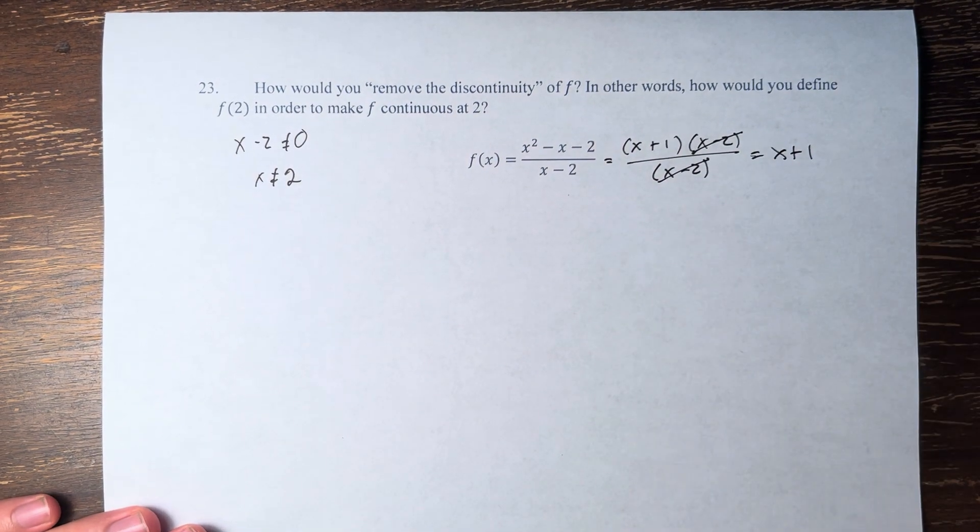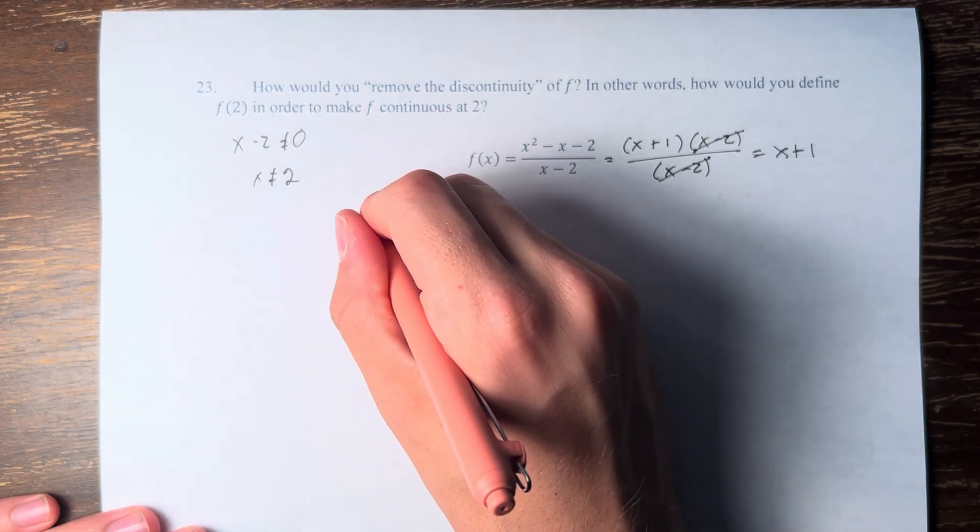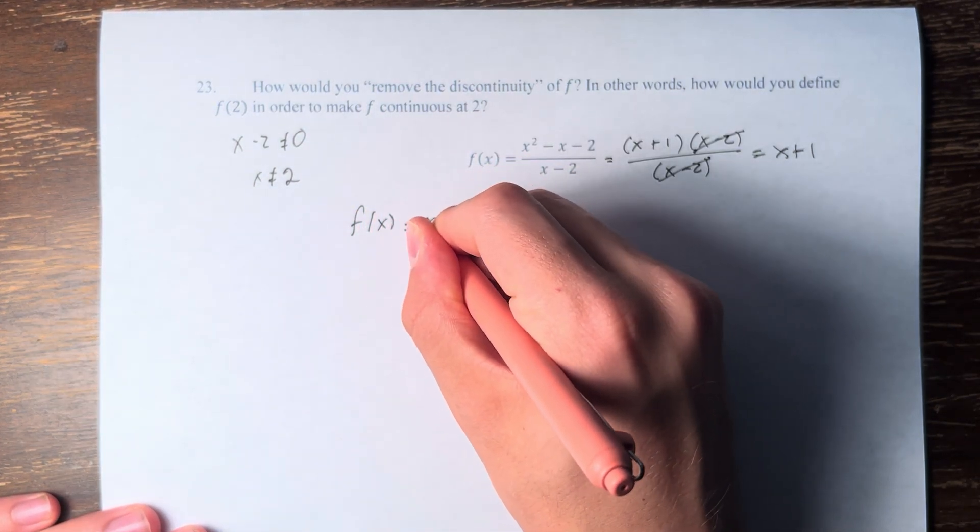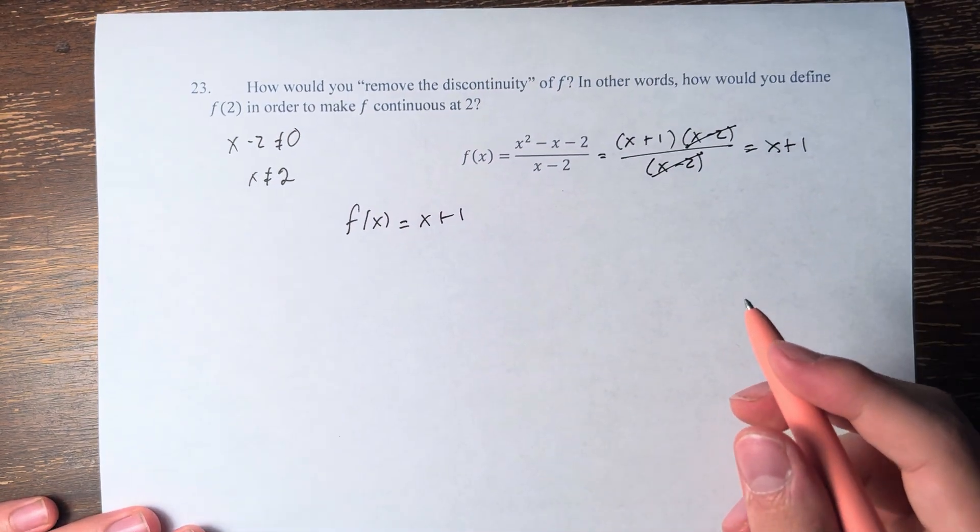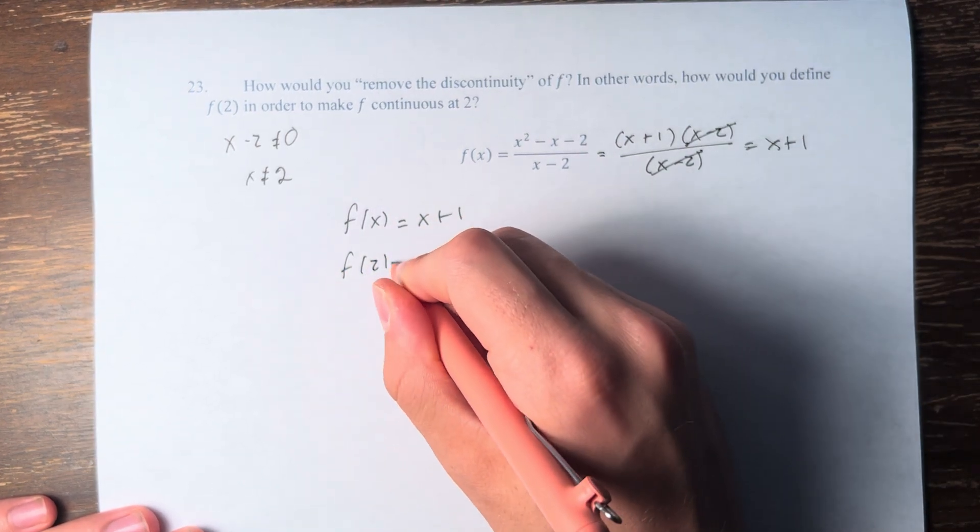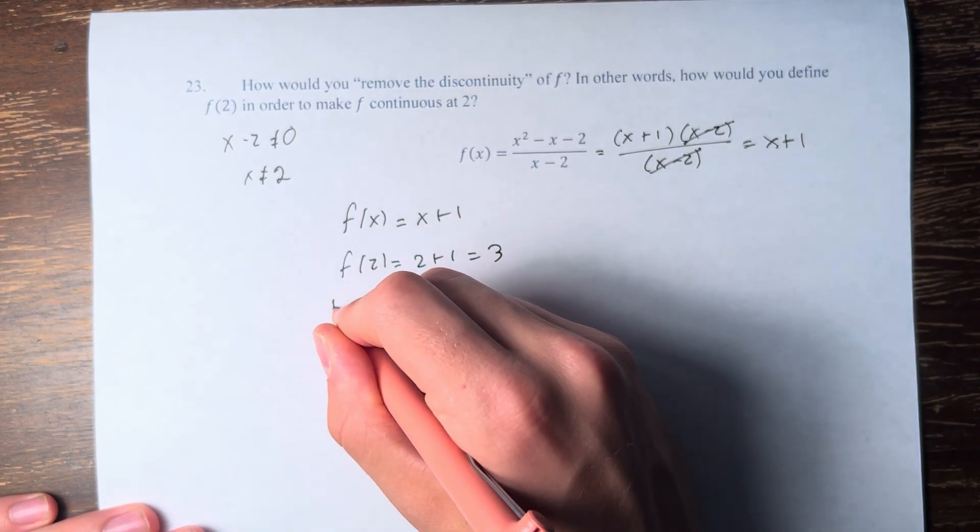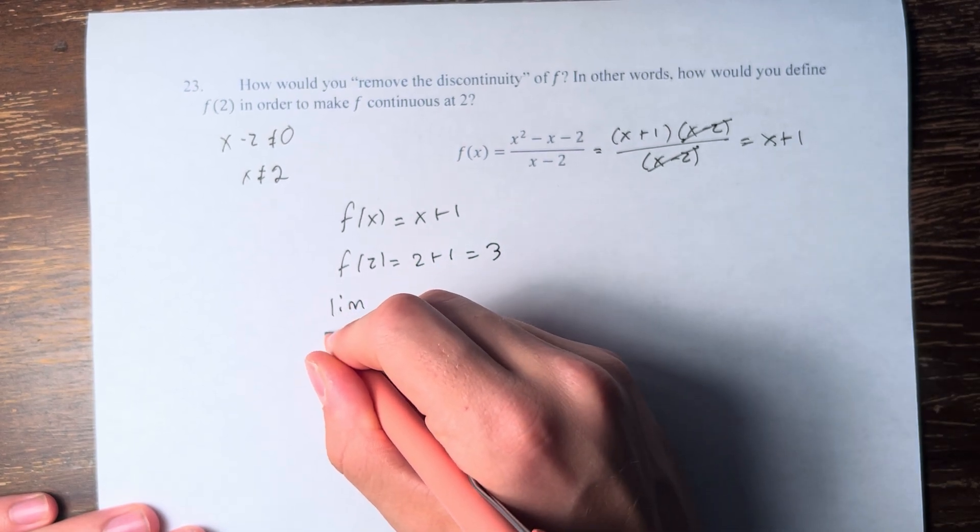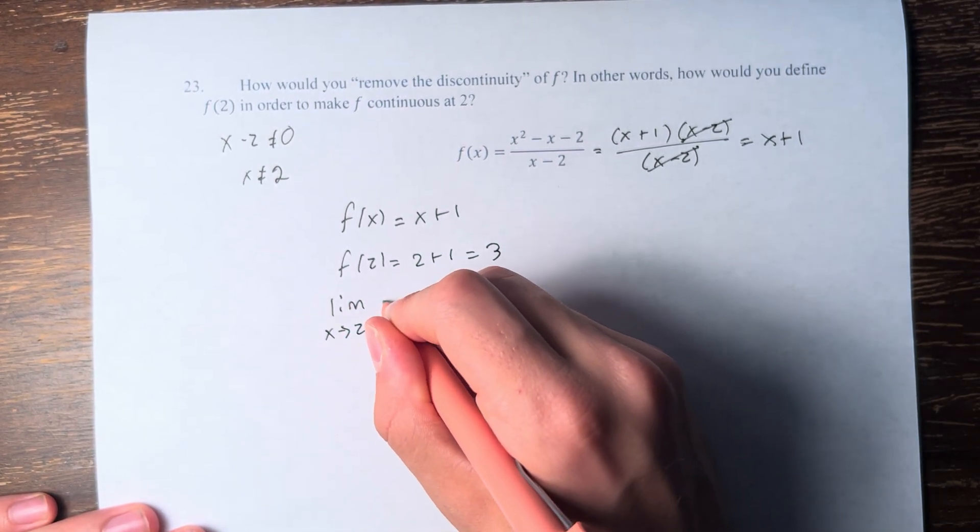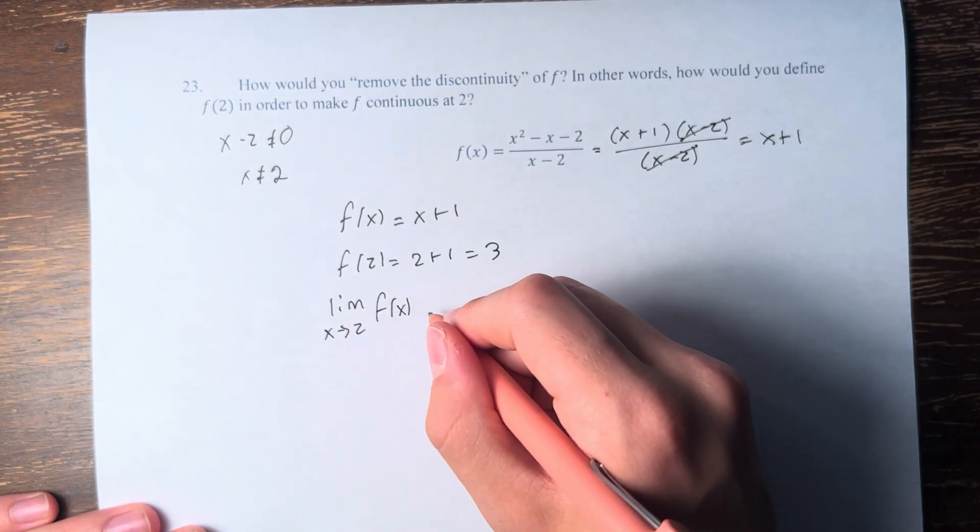We can see that f of x is equal to x plus 1. So if we define f of x as x plus 1, then f of 2 equals 2 plus 1 equals 3. And this is equal to the limit of the function as x approaches 2.